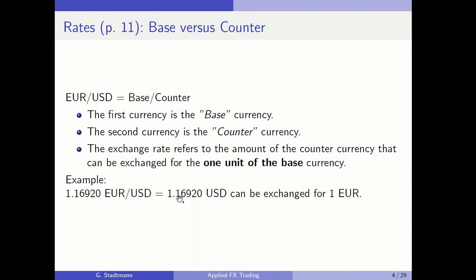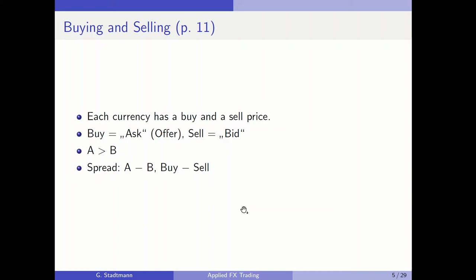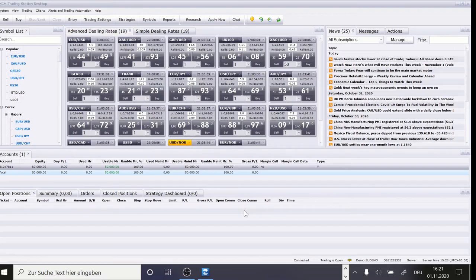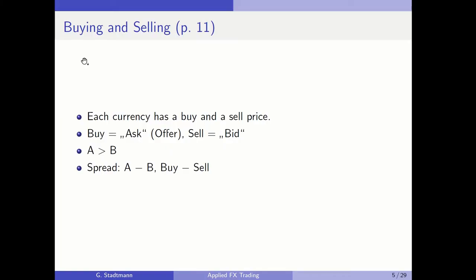Each currency has a buy price and a selling price. There is a sell price and a buy price, and when you compare them, the buy price is always higher than the sell price. The buy price is also labeled as the ask or offer price, and the sell price is the bid. The buy price is always larger than the sell price.